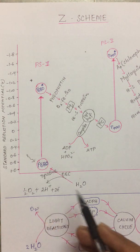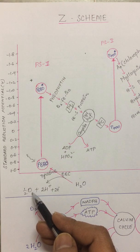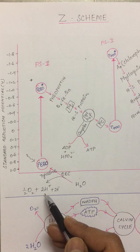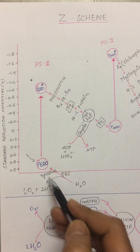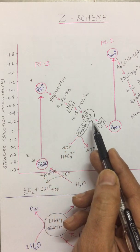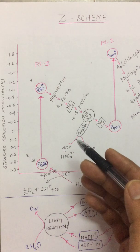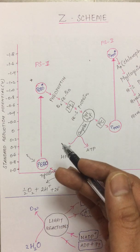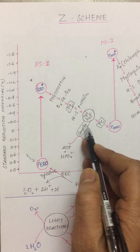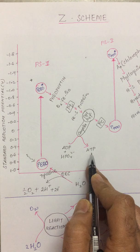For the production of one oxygen molecule, two water molecules must split. Four protons and four electrons are generated. For every one electron transferred, two protons are pumped, so altogether four electrons are transferred and eight protons are pumped across the membrane. This proton gradient creates energy that is trapped in the form of ATP. It is at the cytochrome B6F complex where ADP along with inorganic phosphate is converted into ATP.